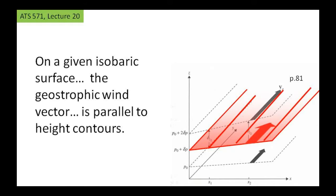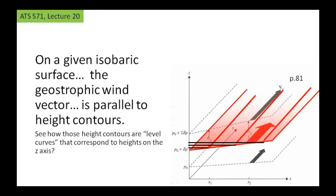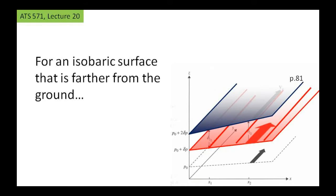The direction of the geostrophic wind depends on the orientation of the height contours, which I've drawn as red lines. The geostrophic wind is parallel to them, and its magnitude depends on the spacing of those height contours. Now we can pick another isobaric level colored in blue — maybe 500 millibars, higher above the ground. The book shows it as P-naught plus 2 delta P, where delta P is apparently negative. The blue geostrophic wind vector is going to be stronger than the one at the lower level.